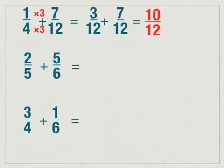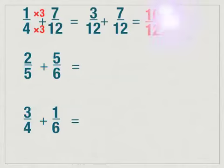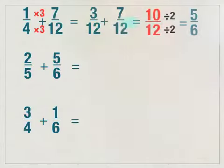When we're dealing with fractions, we want to put our answer in simplest form. Notice that ten and twelve are both even numbers, so we can divide both top and bottom by two to simplify it to five-sixths.